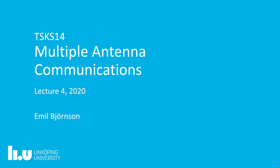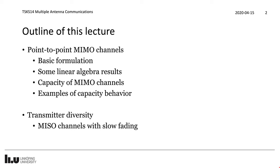Welcome to lecture number four in multiple antenna communications at Linköping University. In this lecture we will focus on point-to-point MIMO channels. We will talk about the basic formulation, how to use linear algebra results to analyze them, with the goal of deriving the capacity of these MIMO channels, and exemplify the behavior of the capacity in several different cases. Towards the end I will also talk about transmit diversity, continuing on slow fading from the previous video, now in the case of using a multiple antenna transmitter, because there is an important connection to MIMO channels.